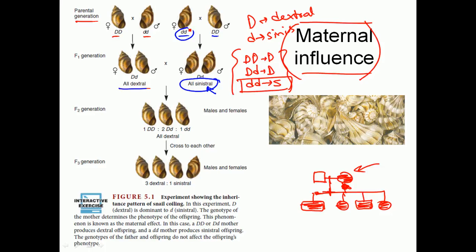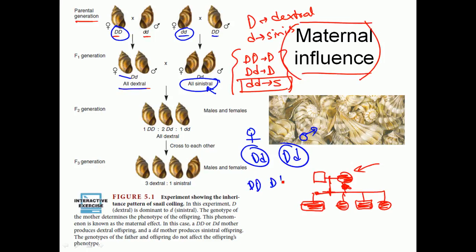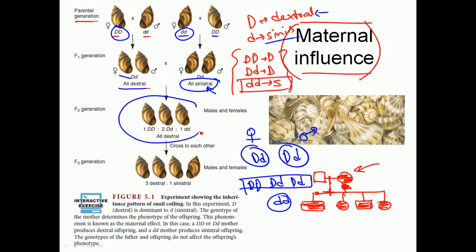The pattern is clear: when the mother was sinistral, all offspring are sinistral; when the mother was dextral, all offspring are dextral. If we take a capital D small d mother and a capital D small d father and cross them, we get four offspring combinations. Among these four, three have at least one capital D and should have dextral coiling, and one that is small d small d should have sinistral coiling — but the answer we get is that all of them are dextral, because the mother we took was dextral.